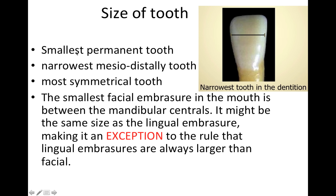As far as size, it's going to be the smallest permanent tooth. It's the narrowest mesial-distally — here we have a picture of that. It's also the most symmetrical tooth.